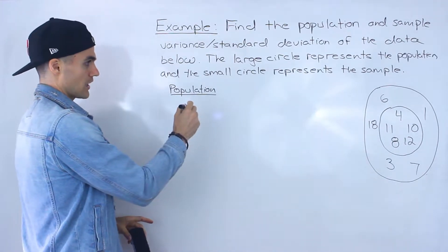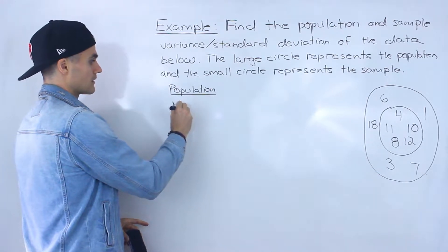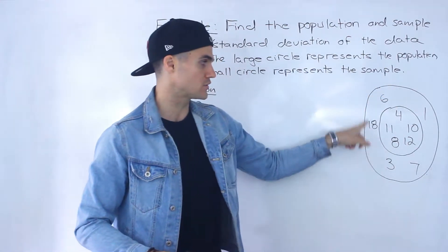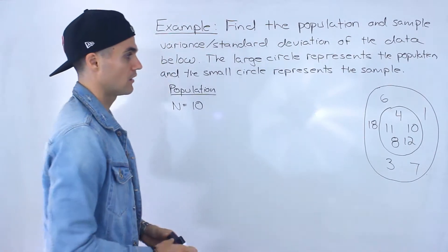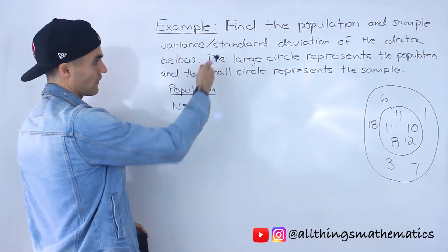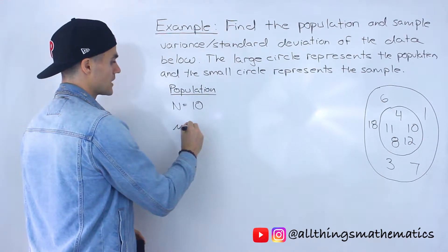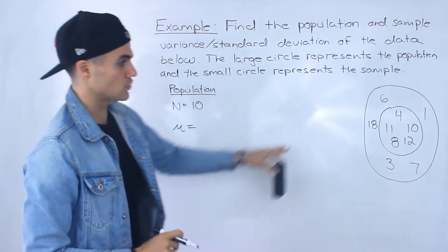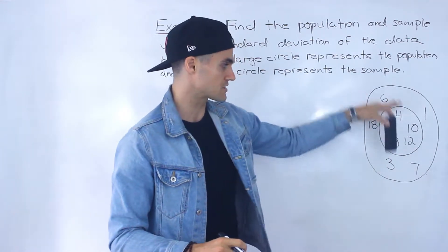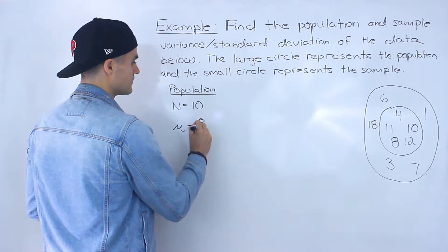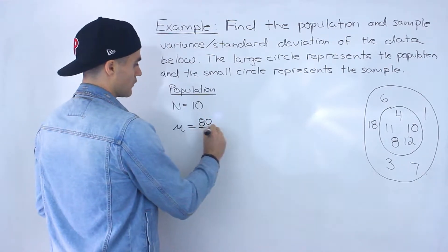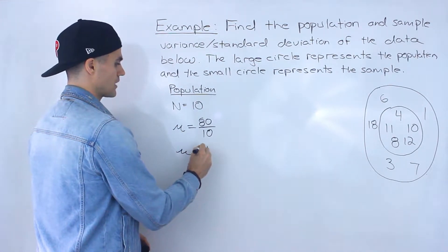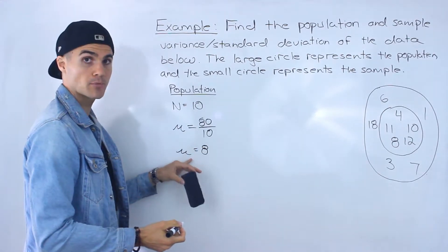With the population — everything under the large circle — notice that there are 10 observations, 10 data points. The first thing you want to do when calculating variance and standard deviation is calculate the mean. You sum up all of the data points, which gives you 80, then divide by capital N — 10 observations. So the population mean is 8.